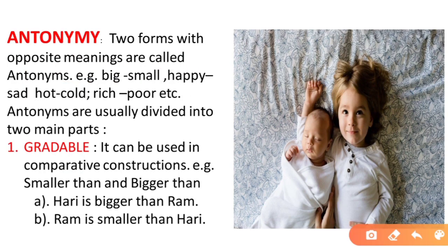Now let's talk about antonymy. Two forms with opposite meanings are called antonyms. For example: big and small, happy and sad, hot and cold, rich and poor, etc.